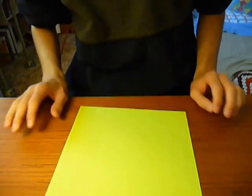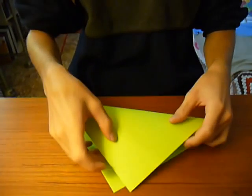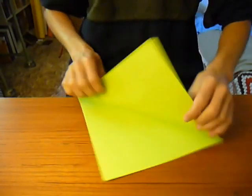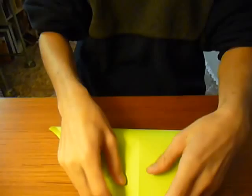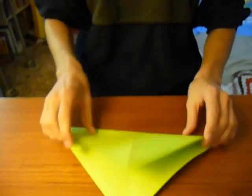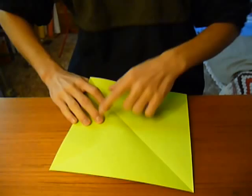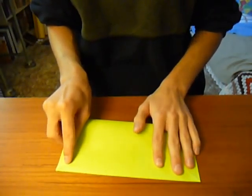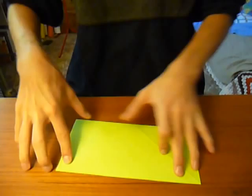Start out with a square sheet of paper, fold the diagonals in both directions, and then fold the center lines as well by folding the edge to meet the other edge.